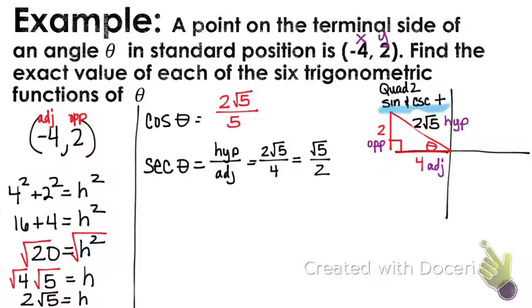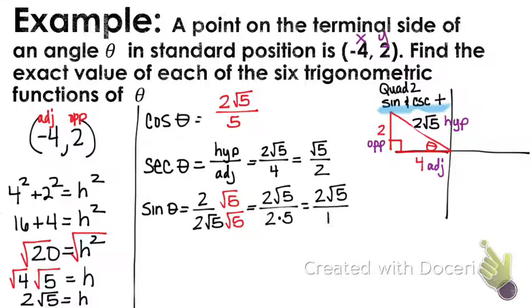Okay, so next we have the sine. So for the sine of theta, sine is opposite over hypotenuse. So opposite is 2. The hypotenuse is 2 root 5. So that would be 2 over 2 root 5. We've got to rationalize this one. Which gives us 2 root 5 over 2 times 5. Which is 2 root 5 over 10. And that simplifies to the square root of 5 over 5. Because 2 over 10 reduces to the square root of 5 over 5.